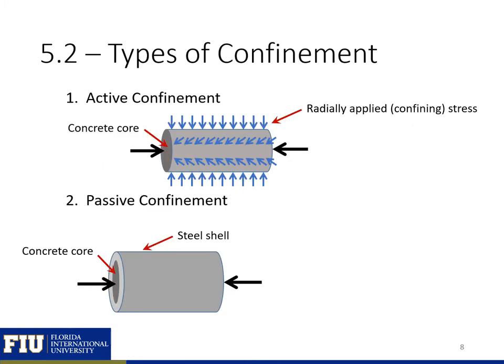There are two main types of confinement: active confinement and passive confinement. In active confinement, we have an actively applied radial confining stress that's applied around our concrete. The blue arrows shown here represent an active confining stress, which will greatly increase the strength in the axial direction for our concrete.